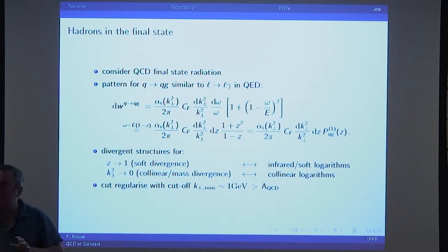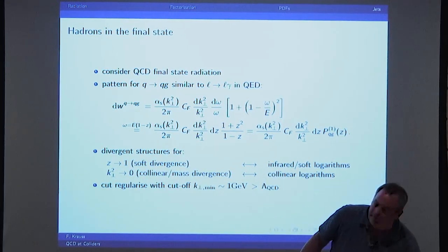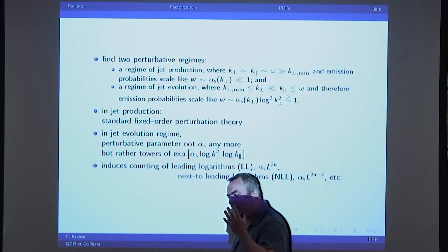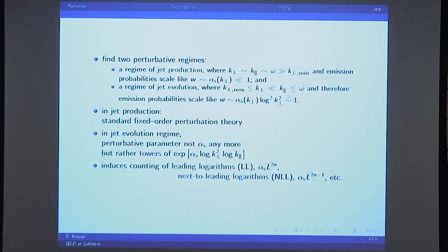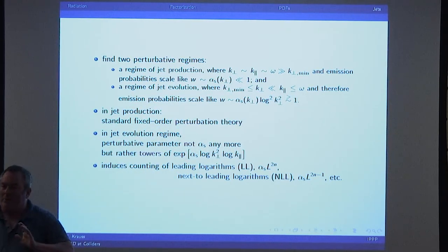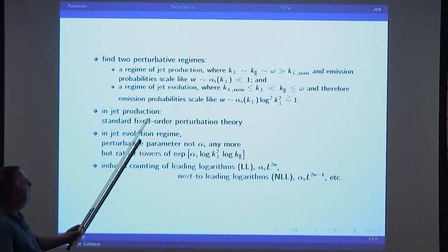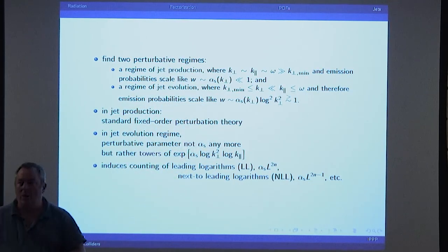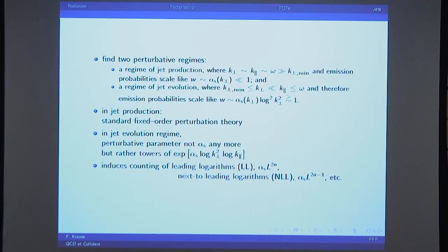I will discuss resummation maybe tomorrow. In the meantime, let us briefly discuss what it means for perturbation theory. We find two regimes where quarks and gluons exist, but where we have to be careful what kind of perturbative language we use. There's one regime — without explaining yet what a jet is — a regime of jet production where all scales: transverse momenta, longitudinal momenta, and energies of the emitted gluons are large.